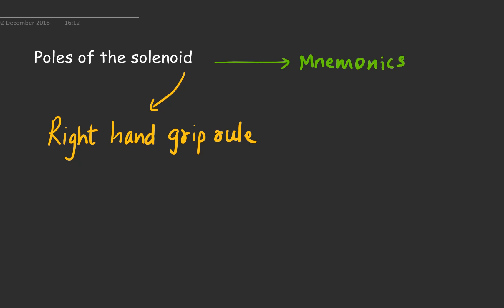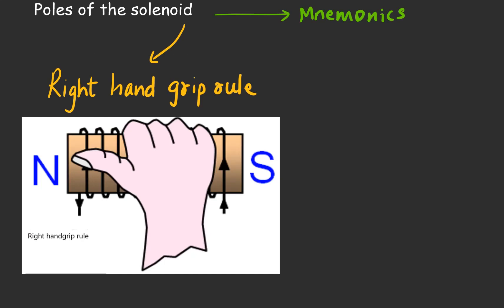Let me explain the right hand grip rule. As you can see in the diagram, the diagram to the left on the screen shows you the right hand grip rule. The rule says that if you know the direction of the current — which is something you must be knowing — you curl your fingers such that the tips show the direction of the current. If you curl the fingers you will realize that the tips also go downwards.